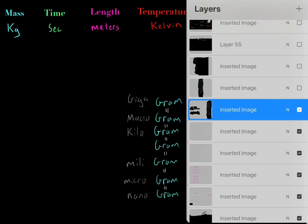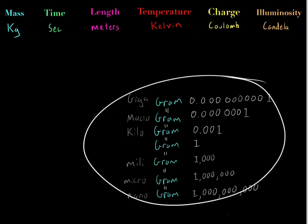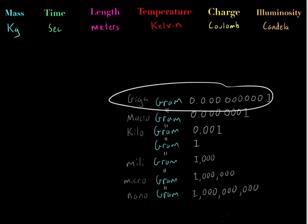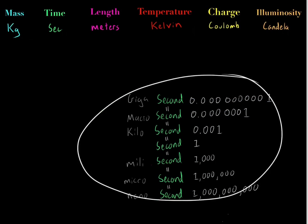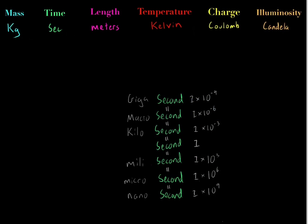The same thing applies to grams: one gram is the same as 1,000 milligrams, which is the same as 0.001 kilograms. If we're dealing with something very small, we use nanograms; if something very large, we use gigagrams. And the same with time. These numbers can get ugly with many zeros, so scientists like to use scientific notation — you should really get used to it.